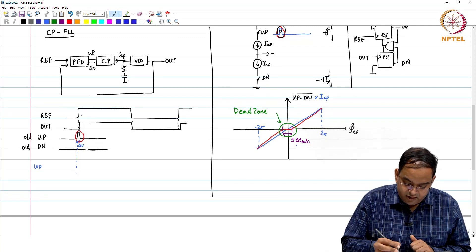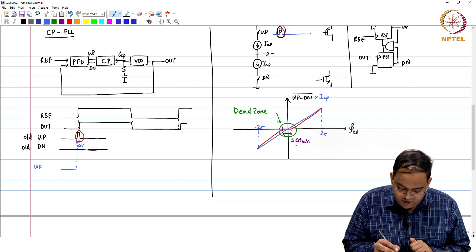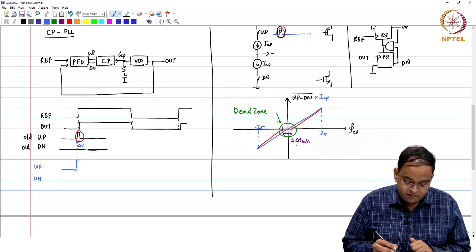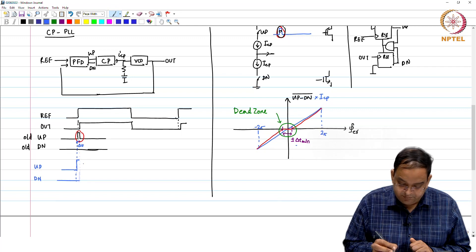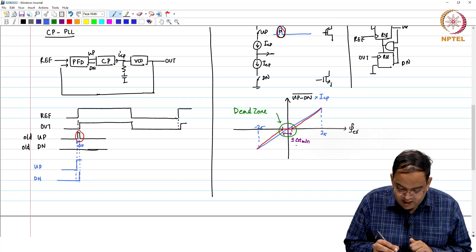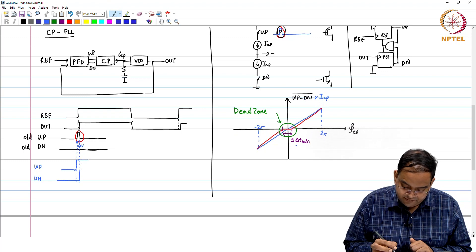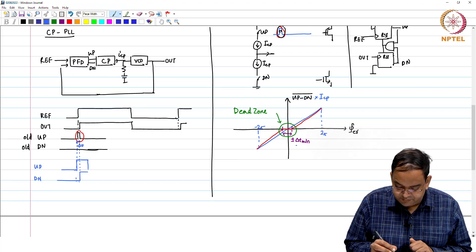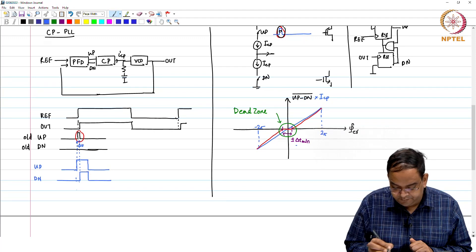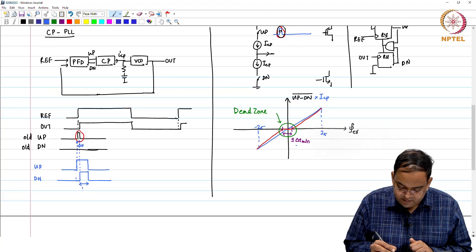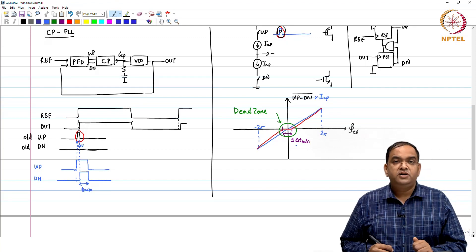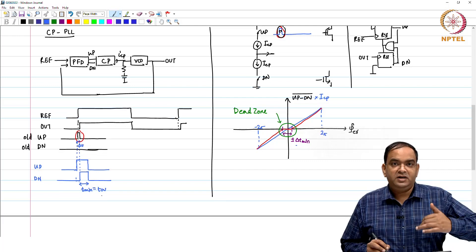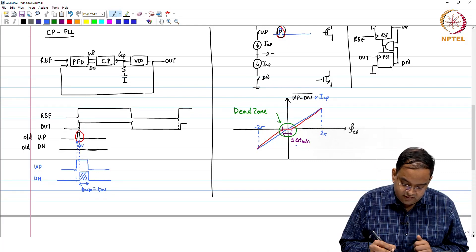When I get my reference pulse high, my up will go high like this. Whenever I get pulse on out, my down pulse will also go high and both the pulses will remain high for t_min time and then both will come down. This is t_min period for which both the pulses up and down are high. It is also called as overlap, where up and down pulses overlap each other, this is the region.